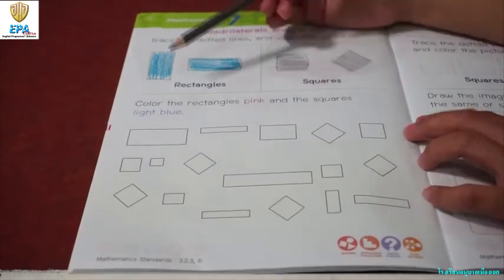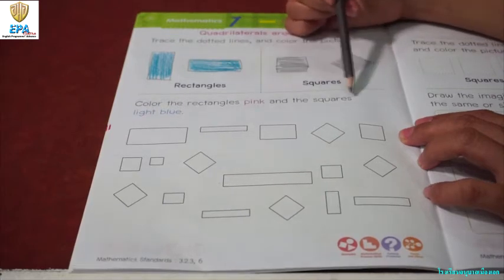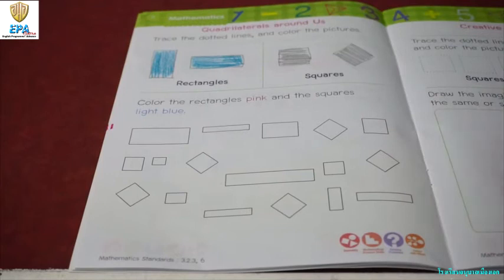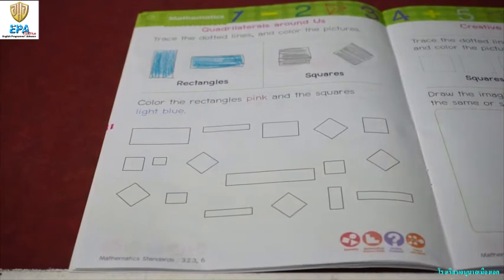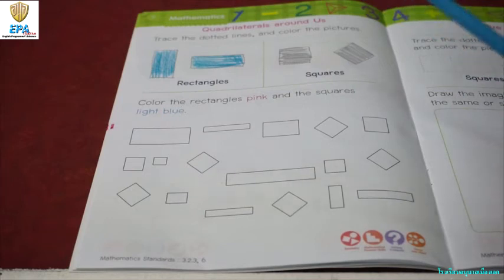Next, color the rectangles pink and the squares light blue. So, this one is light blue and this one is pink.